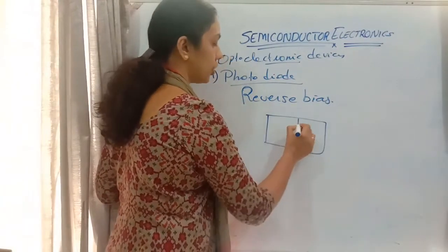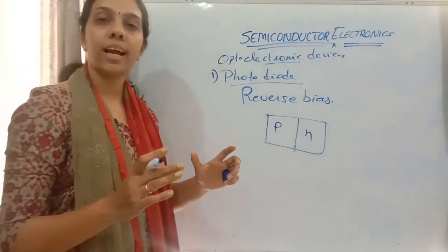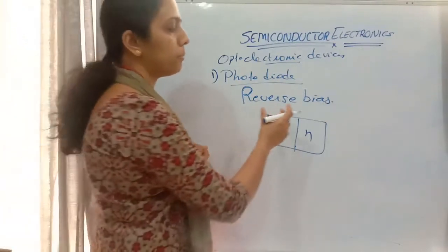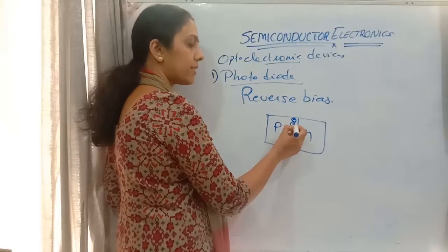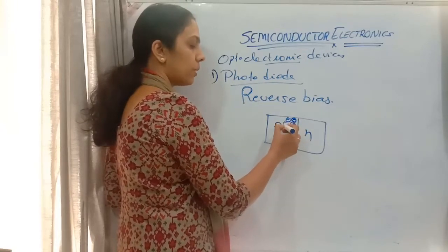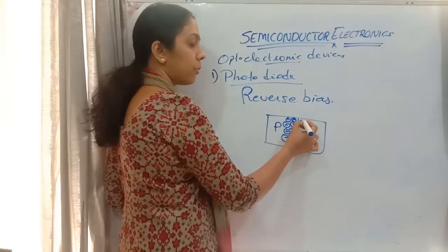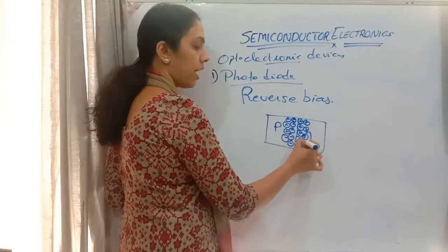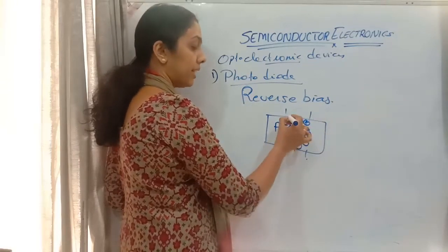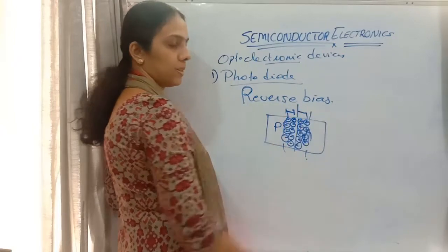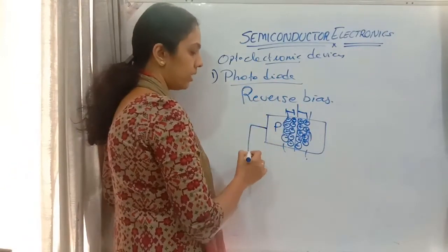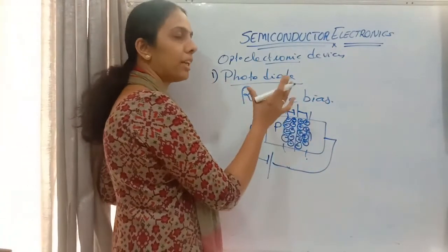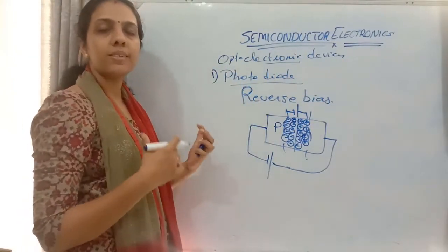In a PN junction, the P region has holes as majority carriers and the N region has electrons as majority carriers. At the PN junction, electrons will form negative ions at the P region and positive ions at the N region. Due to this, a depletion layer generates — negative on the P side and positive on the N side — creating an electric field. When connected in reverse bias, the depletion layer increases because the field is in the same direction, so the barrier potential increases.